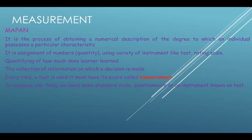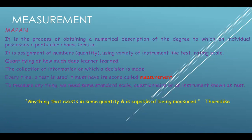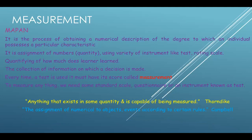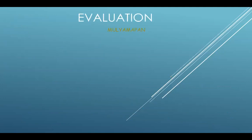Measurement is finding out the quantity of anything — it is weighing something. In the words of Thorndike, anything that exists in some quantity and is capable of being measured is called measurement. In the words of Campbell, the assignment of numerical values to objects and events according to certain rules is called measurement.